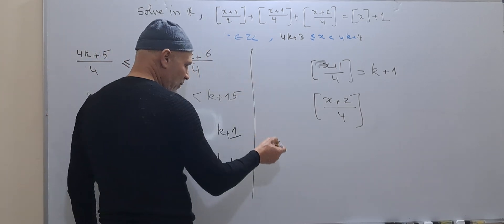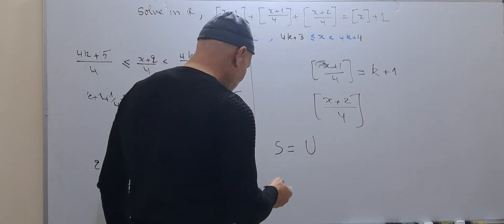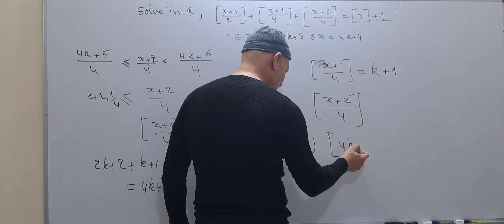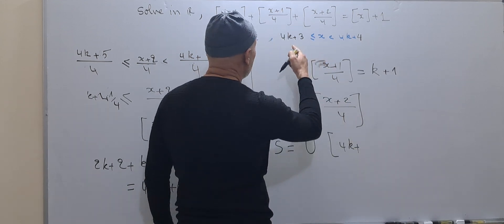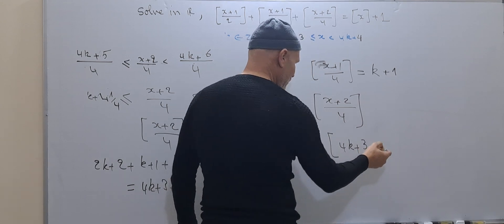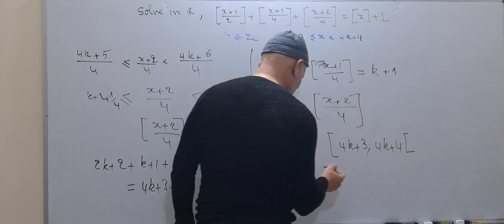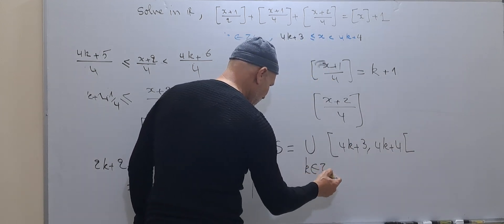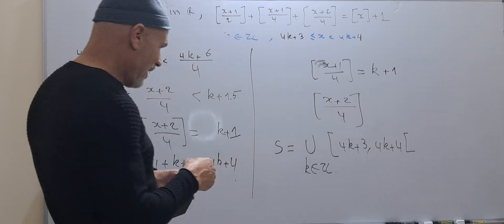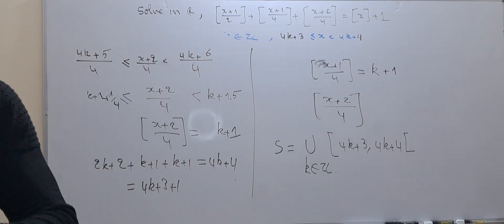The solution of this equation is the union of intervals [4k+3, 4k+4) for k belonging to ℤ. This ends this video — thank you very much, see you next time.